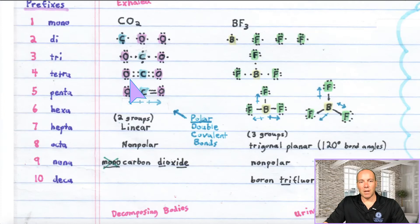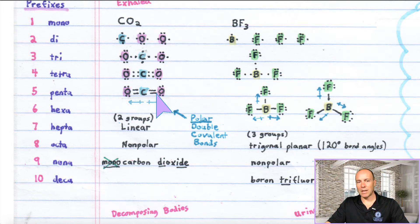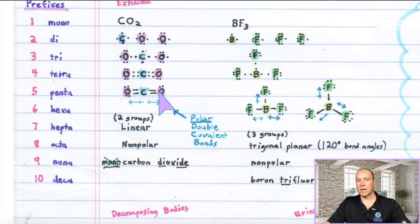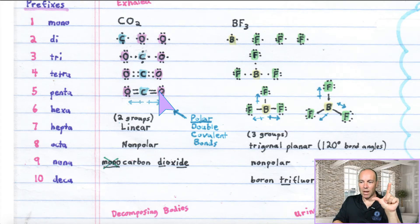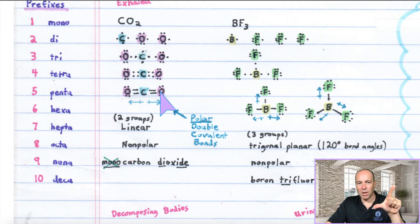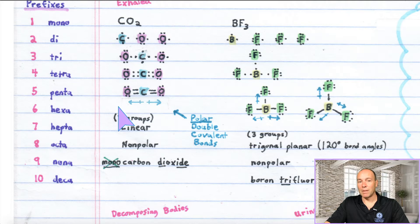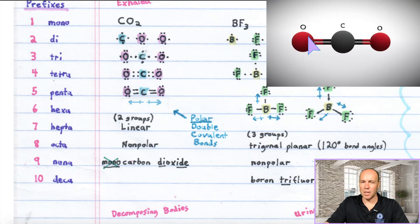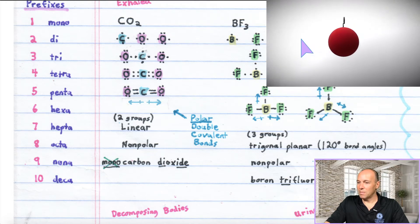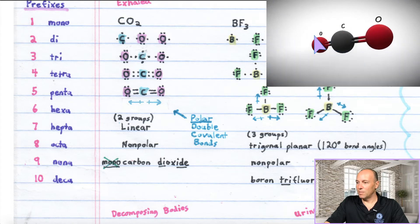The Lewis structure doesn't usually tell us the molecular shape — it just tells us how atoms are connected. The molecule could be shaped like an L or some other angle, but table 4.2 tells us it's actually linear. Anytime the central atom is surrounded by two groups, the molecule is linear — all three atoms line up perfectly. Here's a model of CO2 showing all three atoms lining up. This is a linear molecule.